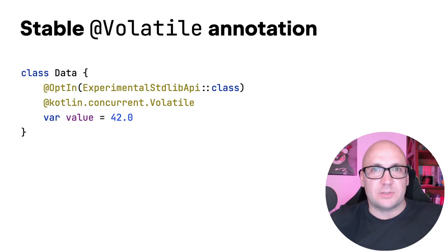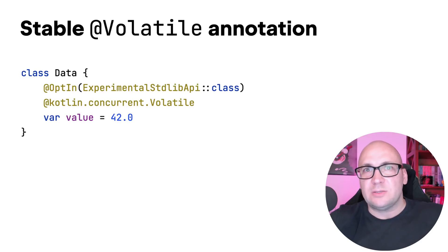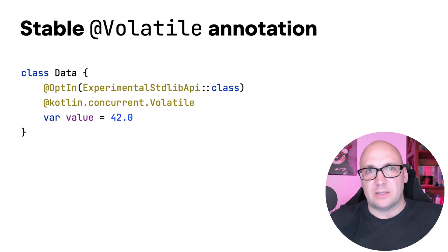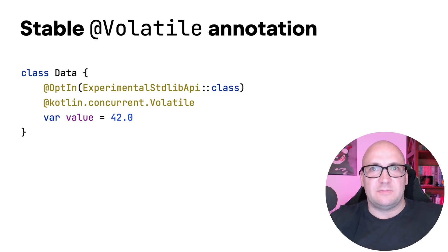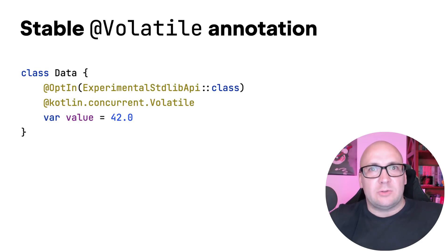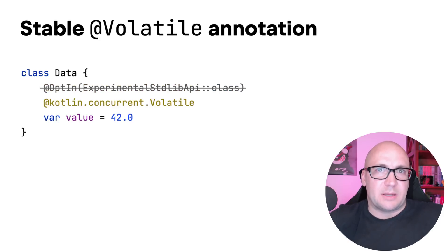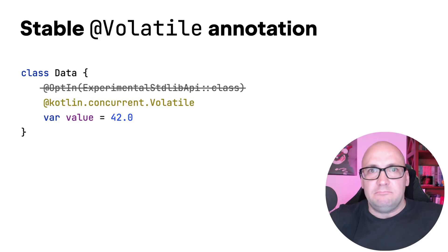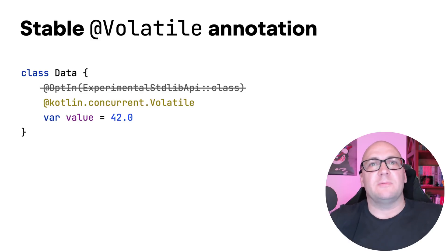If you annotate a var property with the volatile annotation, the backing field is marked so that any reads or writes to this field are atomic, and writes are always made visible to other threads. Prior to 1.8.20, the volatile annotation was only effective on the JVM target and simply ignored on other platforms. In 1.8.20, an experimental common annotation was introduced in the kotlin.concurrent package, previewable on both JVM and Kotlin Native. In 1.9, the kotlin.concurrent.Volatile annotation is now stable.